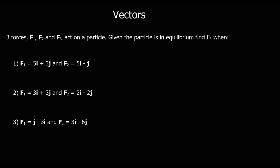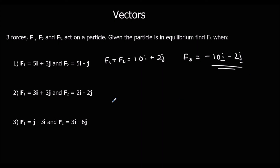Here's another set of questions — work out what f3 is for the particle to be in equilibrium. For question 1, f1 and f2 add up to 10i plus 2j, so we need f3 to be minus 10i minus 2j. For question 2, f1 and f2 add up to 5i plus j, so f3 must be minus 5i minus j.